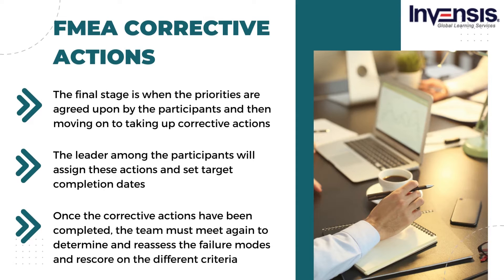The fourth step is FMEA corrective actions. The final stage is when priorities are agreed upon by the participants and they move on to taking corrective actions to reduce or eliminate failure modes, or help in detecting them easily. The leader among the participants will assign these actions and set target completion dates. Once the corrective actions have been completed, the team must meet again to determine and reassess the failure modes and rescore on the different criteria, improving the effectiveness of the corrective actions taken.